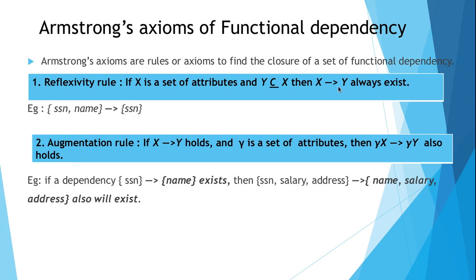That is, if y is dependent on x, it means if x repeats, y also will be repeated. Then in the previous class we saw a concept called closure of functional dependency — that is the set of all functional dependencies which can be derived from an already defined set of dependencies. This total set is called a closure of a functional dependency.